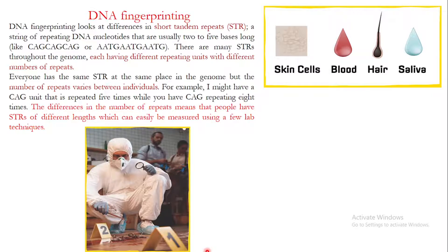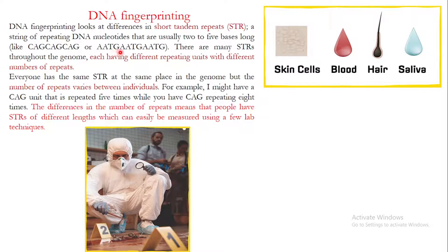DNA fingerprinting looks at differences in short tandem repeats (STRs). These are strings of repeating DNA nucleotides that are usually two to five bases long. For example, an STR can be CAG-CAG-CAG — a three-nucleotide repeat — or AATG-AATG-AATG — a four-nucleotide repeat sequence. DNA fingerprinting identifies these short tandem repeats.